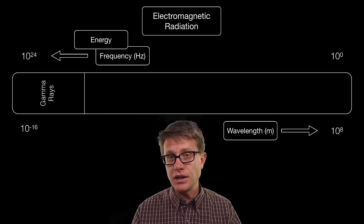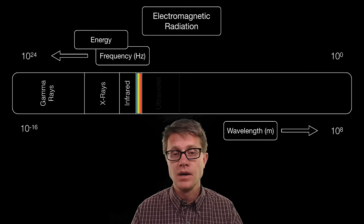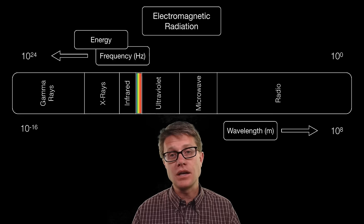If we start with really high energy, we have gamma rays, then x-rays, then infrared and then visible light. You can see we're just seeing a small sliver of electromagnetic radiation. We then move into ultraviolet, then microwaves, and finally radio waves.